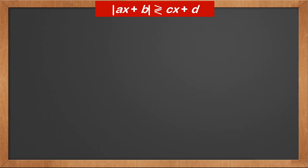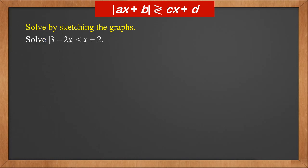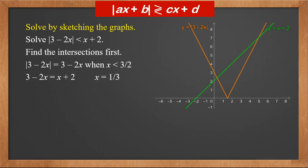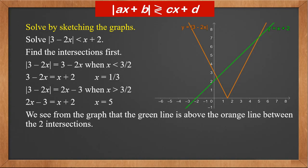The third type of inequality is the modulus of AX plus B is either greater or less than CX plus D — one side has modulus and the other doesn't. We solve this by sketching the graphs. For example, solve the modulus of 3 minus 2X is less than X plus 2. We sketch the graphs and find the intersections first. The modulus of 3 minus 2X equals 3 minus 2X when X is less than 3 over 2, giving the first intersection X equals a third. It equals 2X minus 3 when X is greater than 3 over 2, giving the second intersection X equals 5. From the graph, the answer is X between a third and 5.